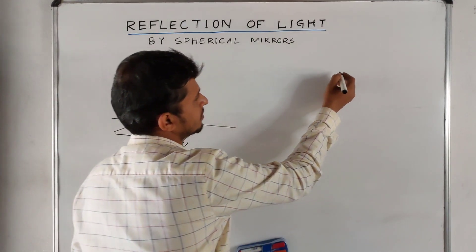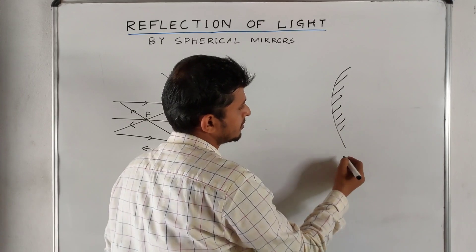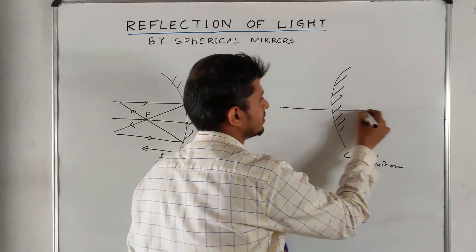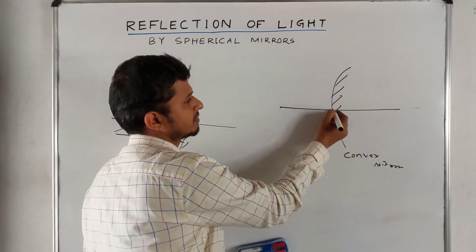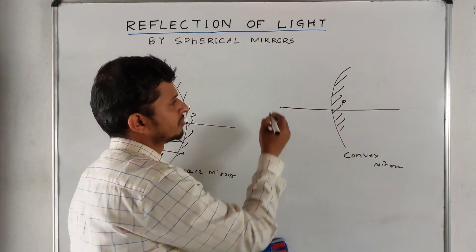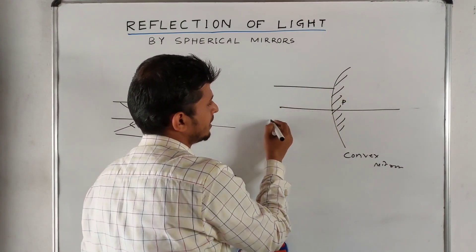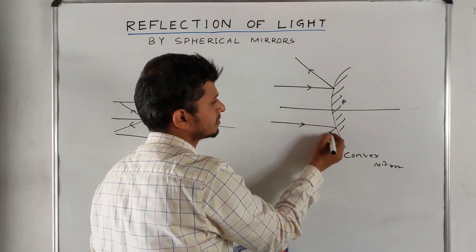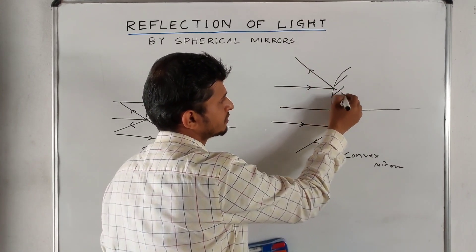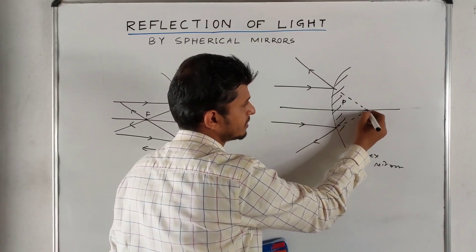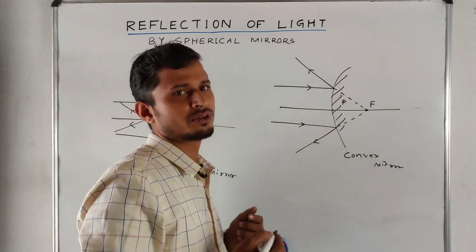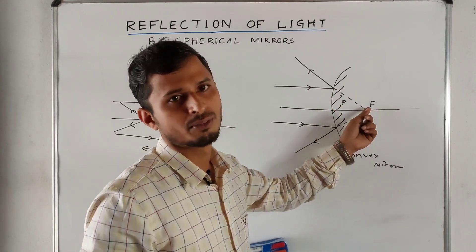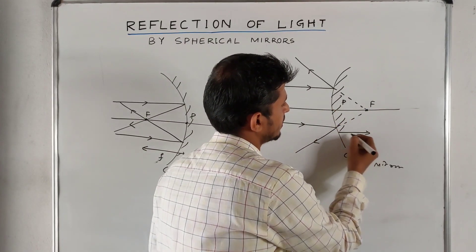For the convex mirror, this is the principal axis and this point is called the pole. Let a parallel ray of light strike on the surface and reflect in this direction. The reflected rays appear to meet at a point, and this point is called the focus or focal point. The distance between the pole and the focus is called the focal length.